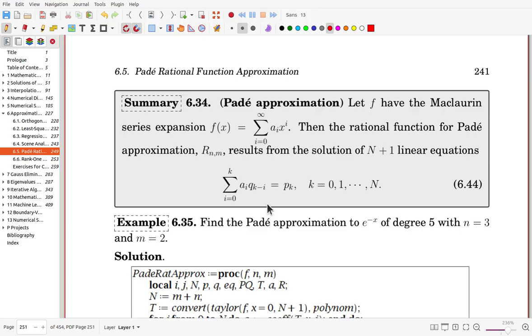Then along with these p values, q values, now you can finalize the Padé rational function. Let's see one example: find the Padé approximation to e to the minus x of degree 5 with n equal 3 and m is 2, which means the numerator has degree 3 and denominator has degree 2.